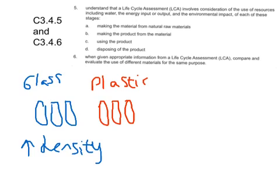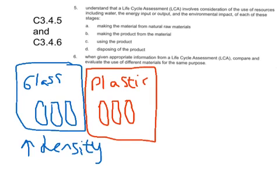But transport may not be the be-all and end-all. If you look at manufacturing, you have to consider that plastics are produced from hydrocarbons using chemical reactions, similar to glass production. Depending on the figures given, overall glass may be better or plastics may be better — you can't tell from just one part of the life cycle. You have to consider all the individual steps. When given information from a life cycle assessment as a table or graph, you've got to say which material is better for its purpose, considering water used, energy input and output, and environmental impact.